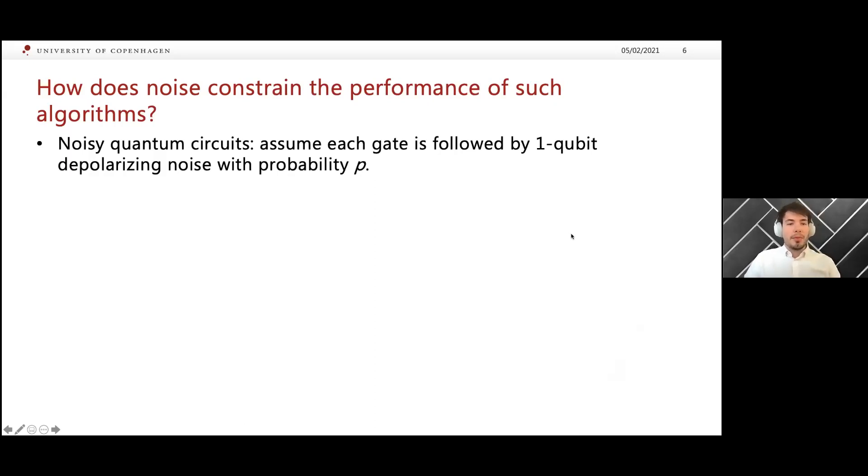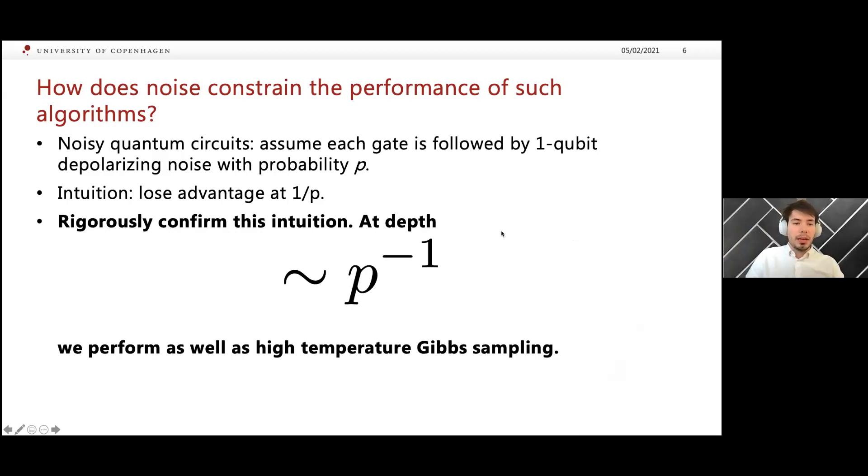We're in the setting where we have one qubit depolarizing noise of probability P. What is the intuition? The intuition is that you would probably lose advantage at some depth, like one over P, because by then you expect to have at least one error per qubit. So we would expect that the quantum computer isn't that useful anymore. Indeed, as far as I know, we are the first to confirm this intuition, like this system size independent bound. What we show is that at roughly P to the minus one, your quantum computer will be performing essentially as well as high temperature Gibbs sampling, which can be typically done efficiently. I'm going to explain that in a bit more detail soon.